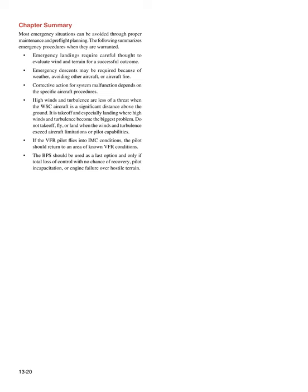Chapter Summary: Most emergency situations can be avoided through proper maintenance and pre-flight planning. Emergency landings require careful thought to evaluate wind and terrain for a successful outcome. Emergency descents may be required because of weather, avoiding other aircraft, or aircraft fire. Corrective action for system malfunction depends on the specific aircraft procedures. High winds and turbulence are less of a threat when the WSC aircraft is at a significant distance above the ground — it is during takeoff and especially landing where high winds and turbulence become the biggest problem. Do not take off, fly, or land when winds and turbulence exceed aircraft limitations or pilot capabilities. If the VFR pilot flies into IMC conditions, immediate action must be taken.